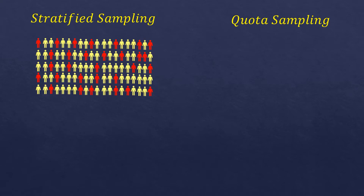Let's assume we have a population of 100 people represented by icons. The red ones are female and the light yellow ones are male. There are 30 out of 100 females and 70 out of 100 males — so 30% female and 70% male in our population. Here's how we select samples using stratified sampling from this population.